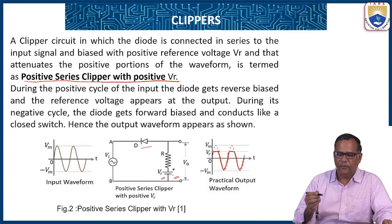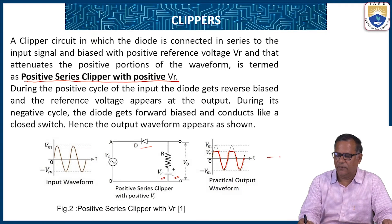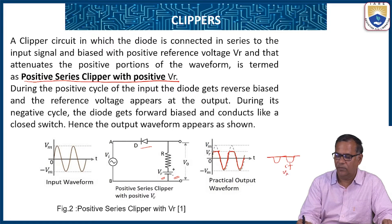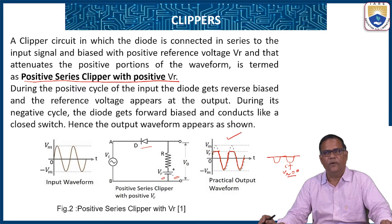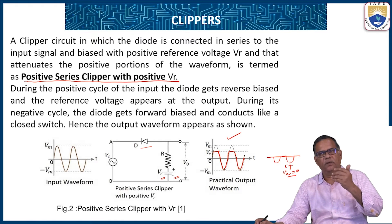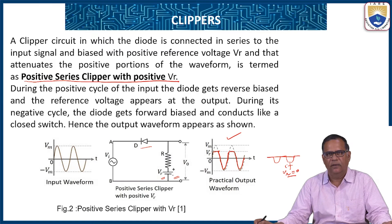If you reduce the Vr value to zero, the waveform becomes the same as the basic positive series clipper. If Vr is positive, you get a waveform where voltages more than plus Vr are blocked or eliminated.